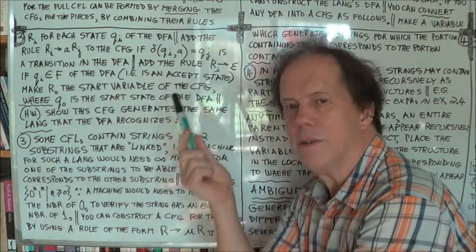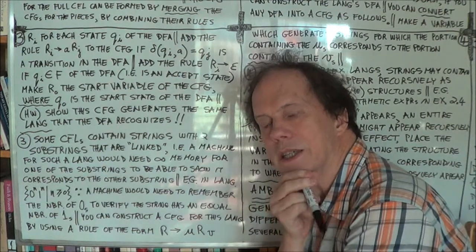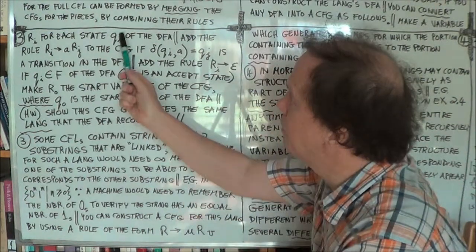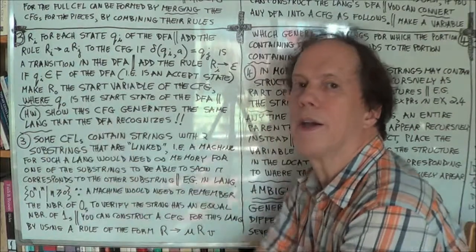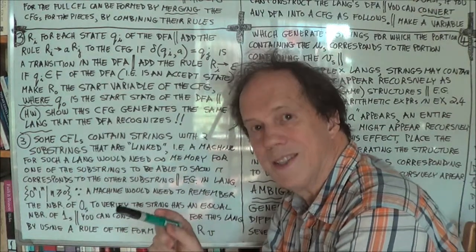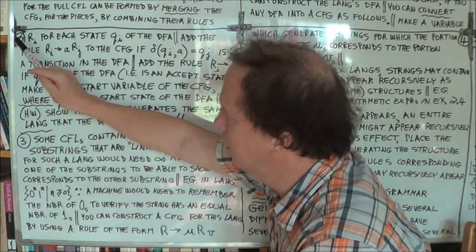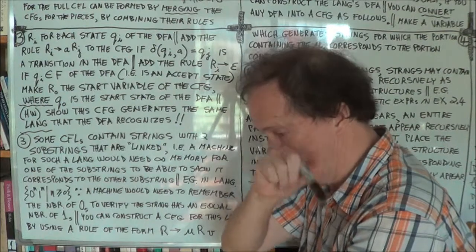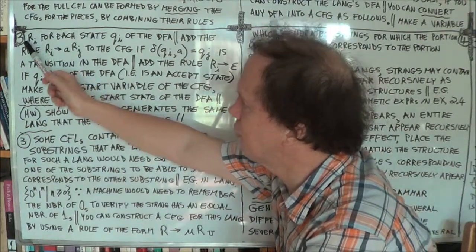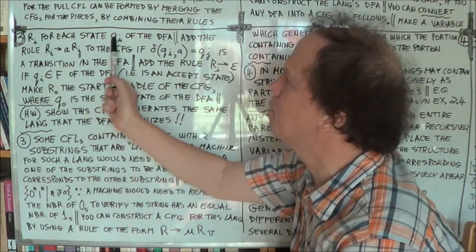Well, start with the machine, of course. Have a look at its states. For each state in the machine — this DFA — create a corresponding variable symbol. So state QI will have a corresponding variable RI. That's your first step, one-to-one. Have a look at the machine, find all its states, and then for each state QI, create a variable in your grammar that you're constructing. You're in the process now of creating a grammar, a CFG. So create a corresponding variable symbol — a capital letter, say RI — corresponding to state QI.